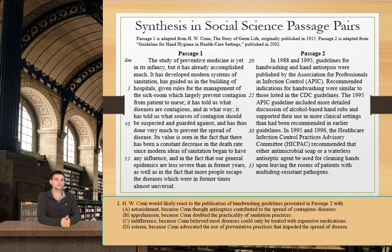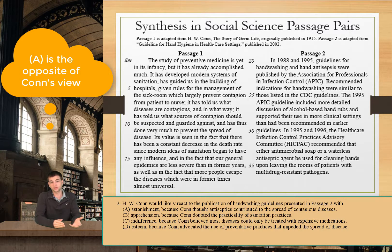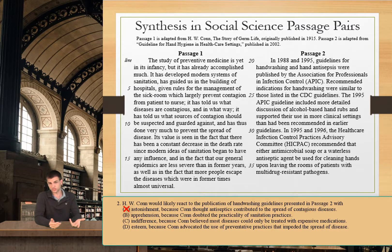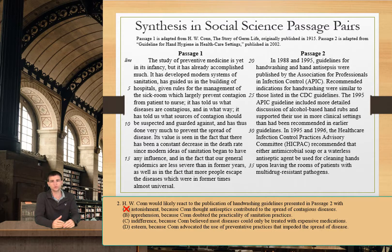Let's take a look at our answer choices. Choice A tells us that Kahn will react with astonishment because he thought antiseptics contributed to the spread of contagious diseases. That's easily eliminated. Choice B says Kahn will react with apprehension because he doubted the practicality of sanitation practices. Kahn already said that even though sanitation is in its infancy, he's seen noticeable improvements and that the mortality rate has actually decreased. So B is also a very bad choice and we can easily eliminate that.